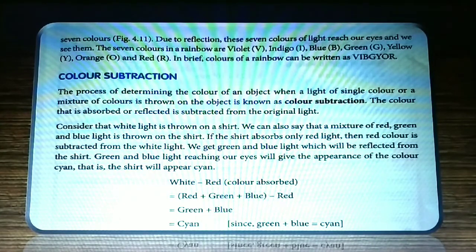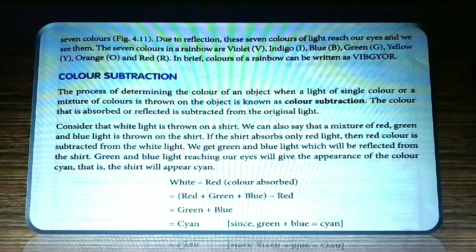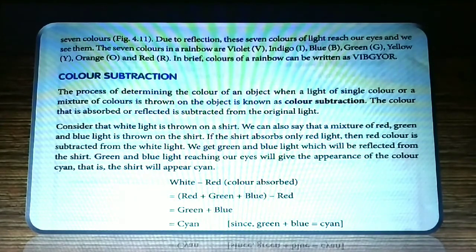The colors of a rainbow can be remembered as VIBGYOR. Now let's come to color subtraction. The process of determining the color of an object when a light of a single color or a mixture of colors is thrown on the object is known as color subtraction. The color that is absorbed is subtracted from the original light.